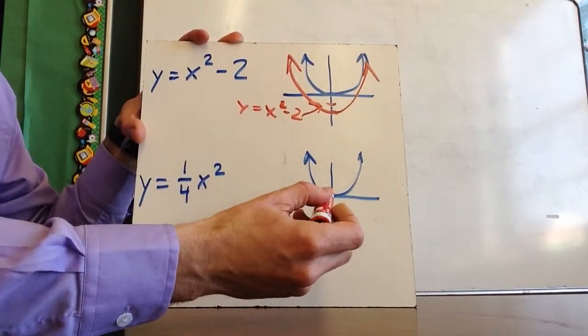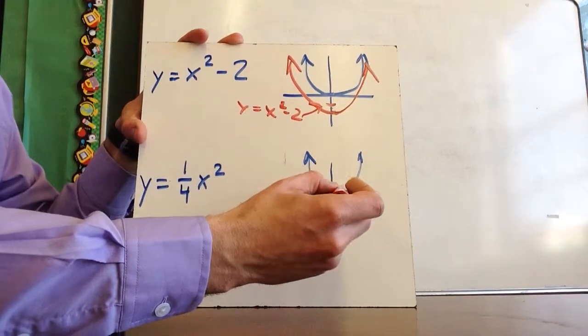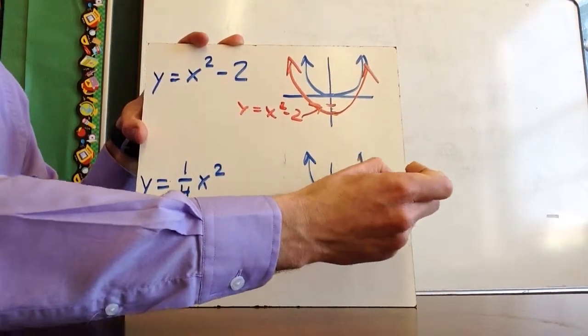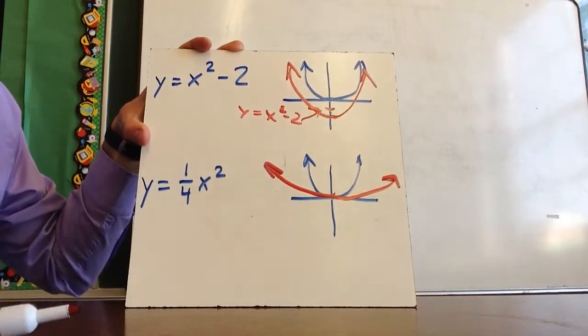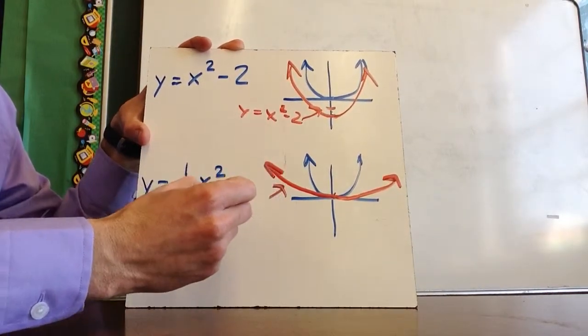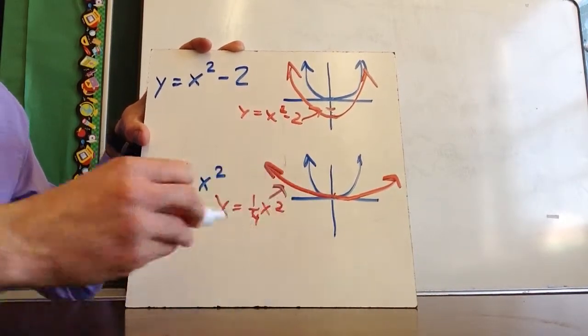And then y = 1/4 x² is going to be the exact same thing, but this is going to be coming out like this. And this is y = 1/4 x².